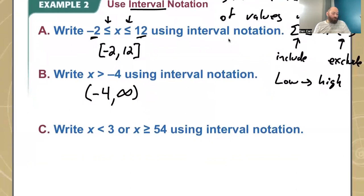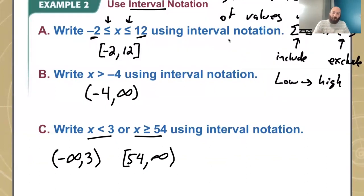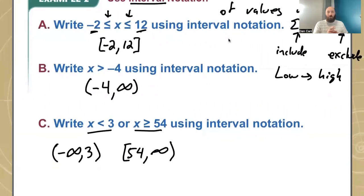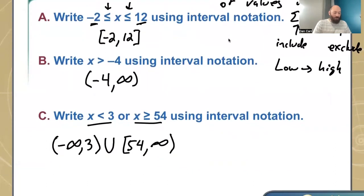And then we have a union here: x is less than 3. Going lowest to highest, the lowest number is negative infinity and it goes up to 3. We do not include the negative infinity, and we do not include the 3. When we do x is greater than or equal to 54, the lowest number is 54 and the highest is positive infinity. We put a bracket on the 54 and parentheses on the infinity because we're including the 54. When we're looking for an or, it is a union, so we're going to put a U here. That means we are considering both intervals as part of this — that's our interval notation when we have two inequalities with an or statement.